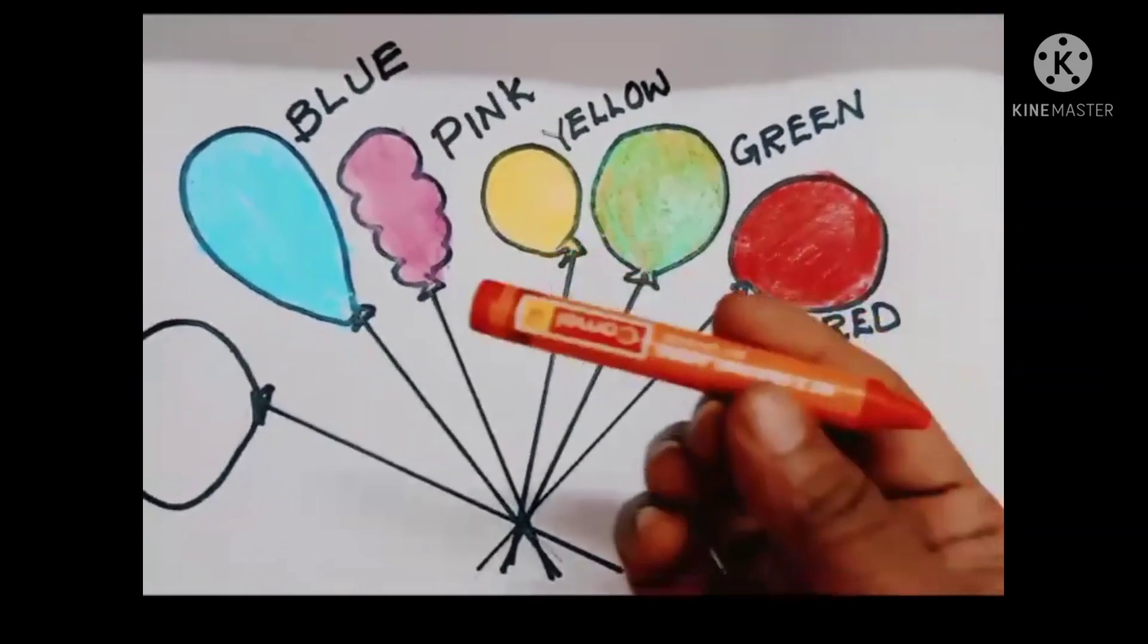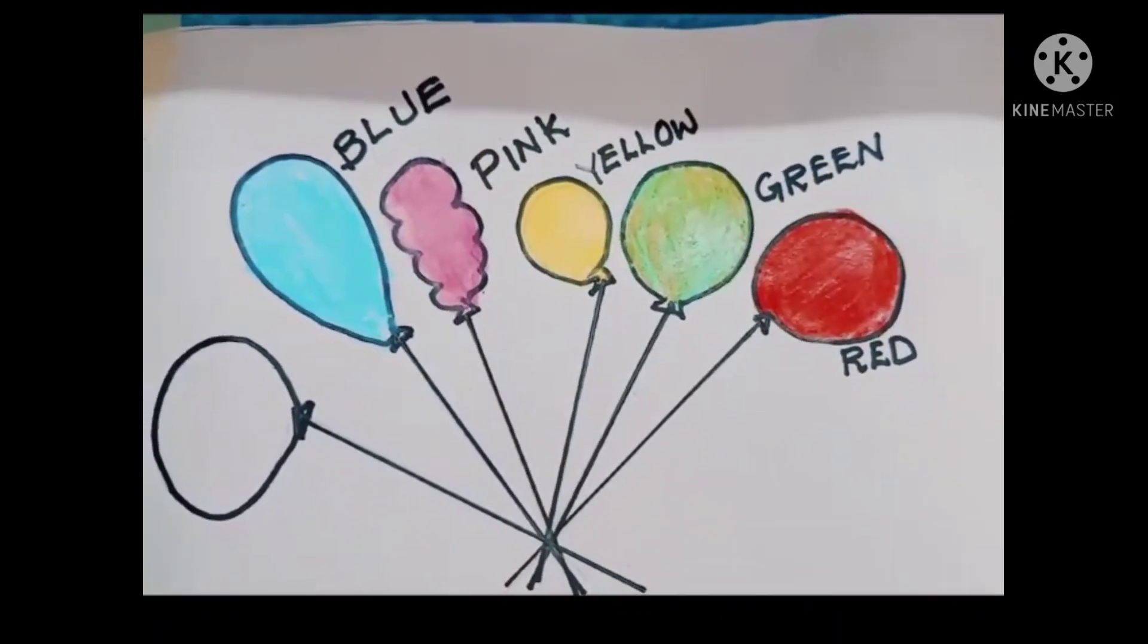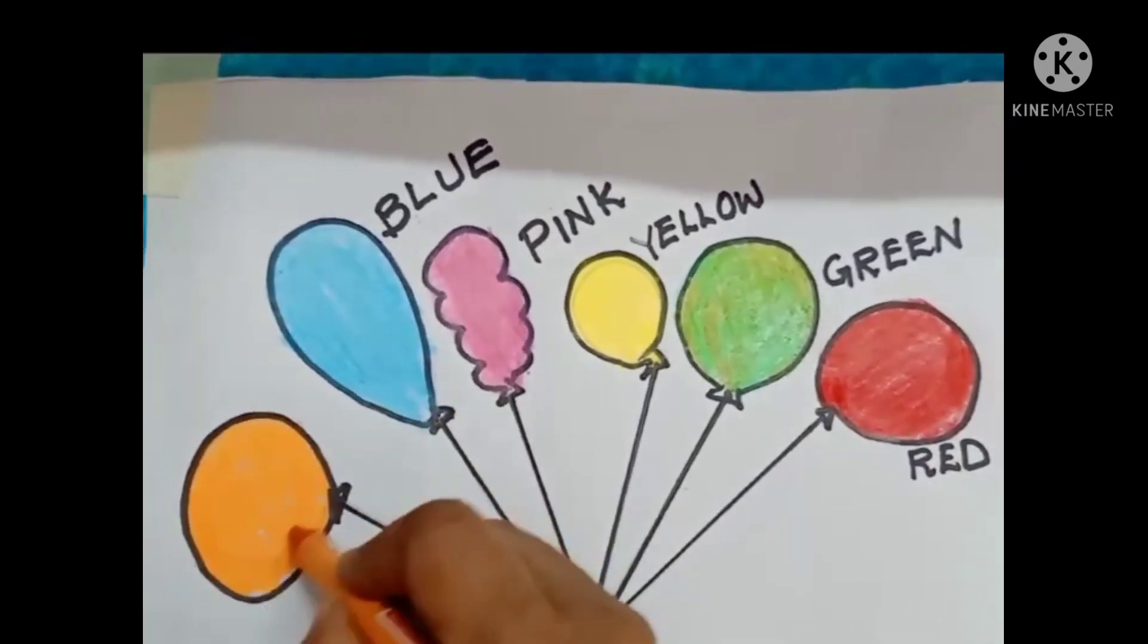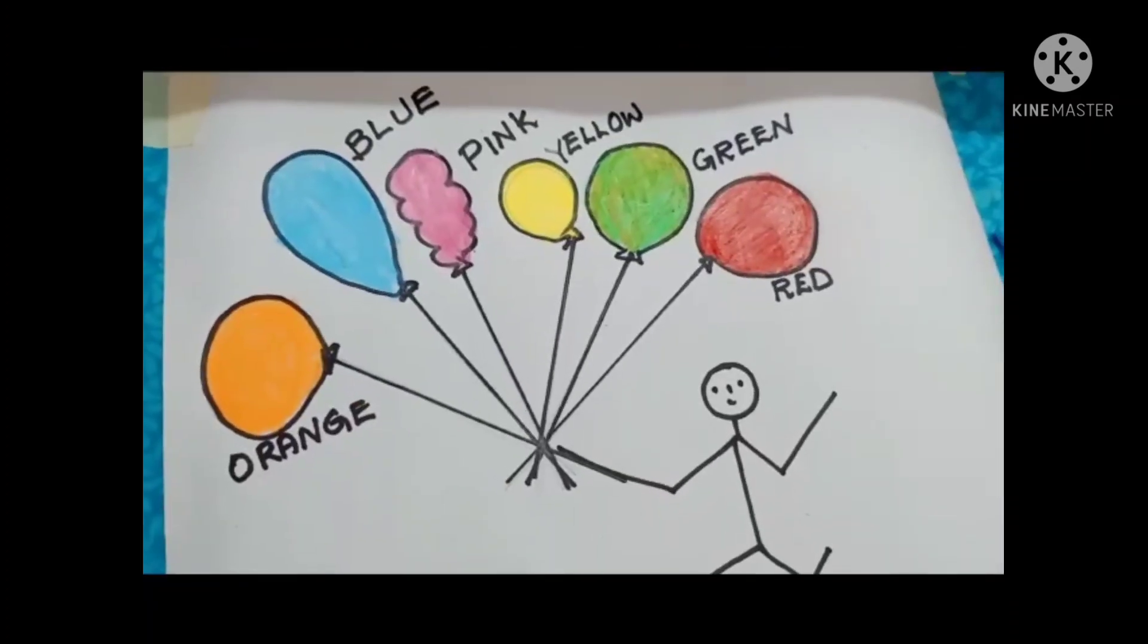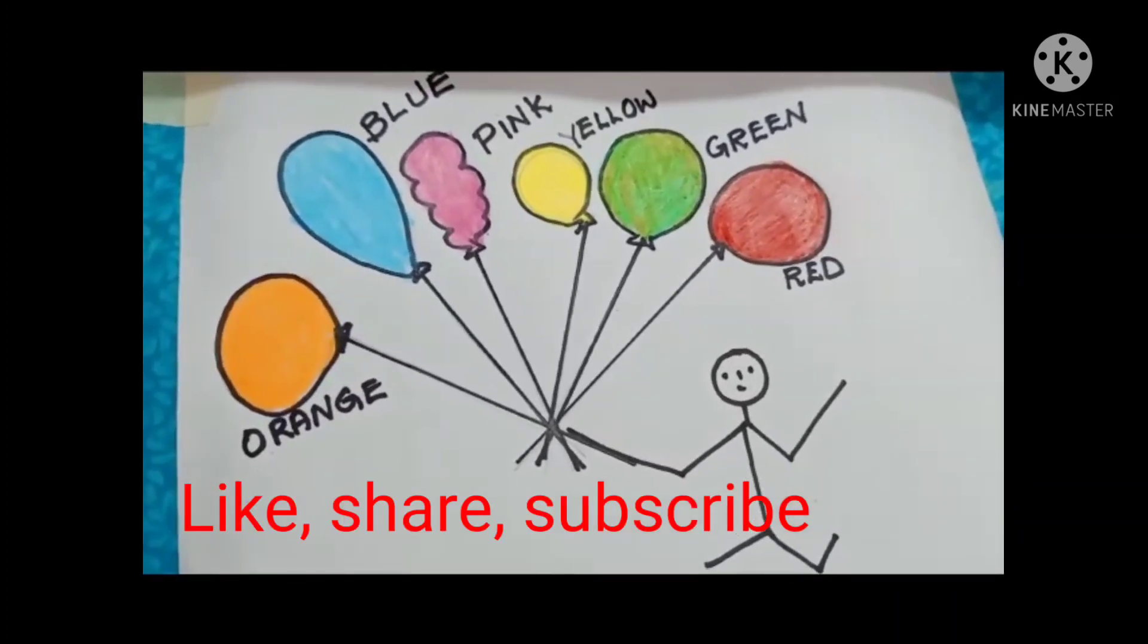Then what? Which color is this? This is orange. Orange. And color the other balloon. So it's very beautiful. Write the spelling of orange and decorate like this.